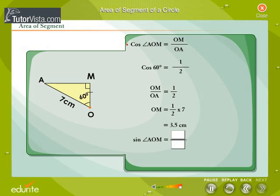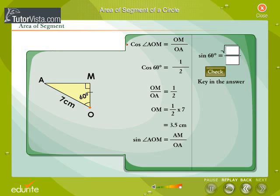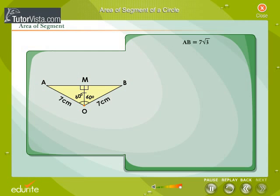Again, in right angle triangle OMA, find sin of angle AOM. Sin 60° = √3/2. So, we get AM by OA is equal to root 3 by 2, and AM is equal to root 3 by 2 into 7. AB is equal to 2 times AM, that is equal to 7√3.